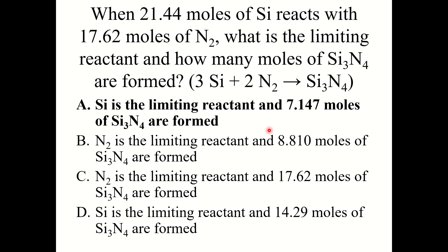The correct answer is A. Si is the limiting reactant and 7.147 moles of Si3N4 are formed. You would convert from 21.44 moles of Si to moles Si3N4 using the coefficients, and also convert from 17.62 moles N2 to moles Si3N4. Si is capable of producing 7.147 moles of Si3N4, whereas N2 could form 8.81 moles. Since silicon produces less product, silicon is the limiting reactant.